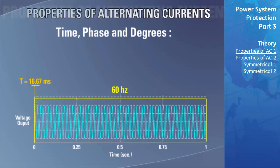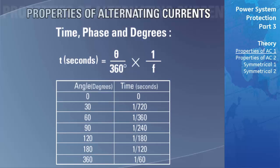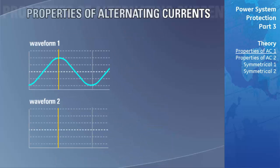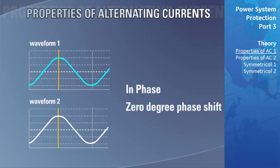The period corresponds to the time it takes the waveform to go through 360 degrees. Using the formula: time = (phase angle / 360) × period, we can fill in a table displaying the angle of a sine wave and the associated time to reach that angle. If two waveforms of the same frequency are at the same point in their cycle at any given time, they are said to be in phase with each other, with a zero-degree phase shift between them.